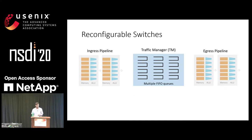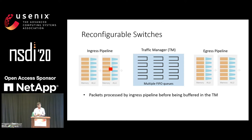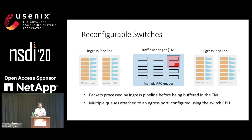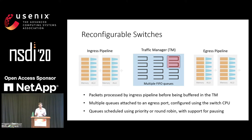In these programmable switches, packets are processed by an ingress pipeline which consists of lookup memory, registers for mutable state, and ALUs for simple computation. This can decide which queue inside the traffic manager to enqueue the packet into. Several such queues are attached to an outgoing egress port, which can be configured using the switch CPU. Today, inside this traffic manager, only a handful of policies are available — such as strict priority or round robin between queues and limited support of pausing — which is somewhat restricted for the type of scheduling algorithms we want to realize.